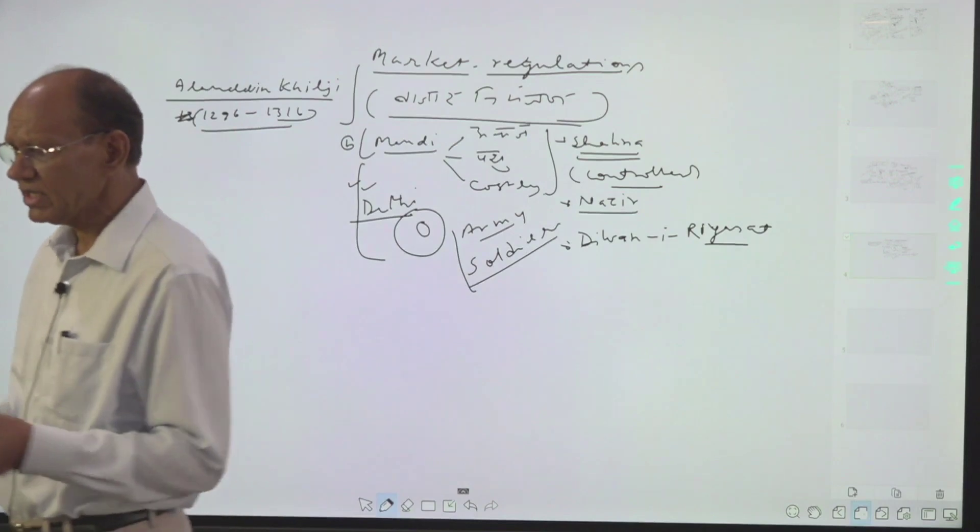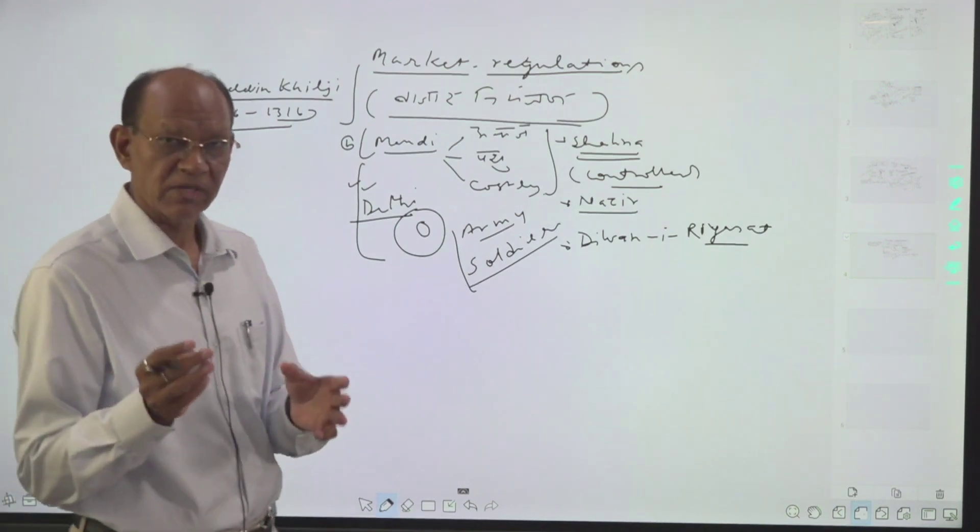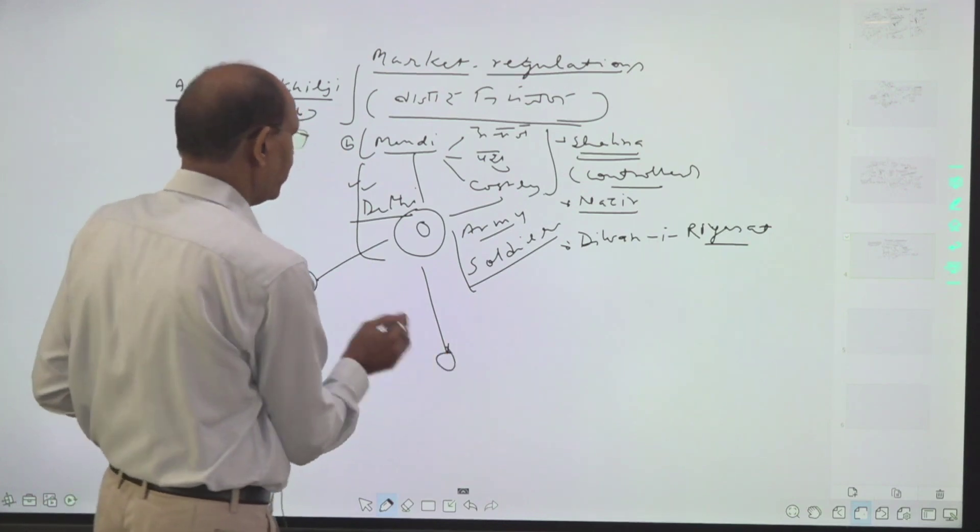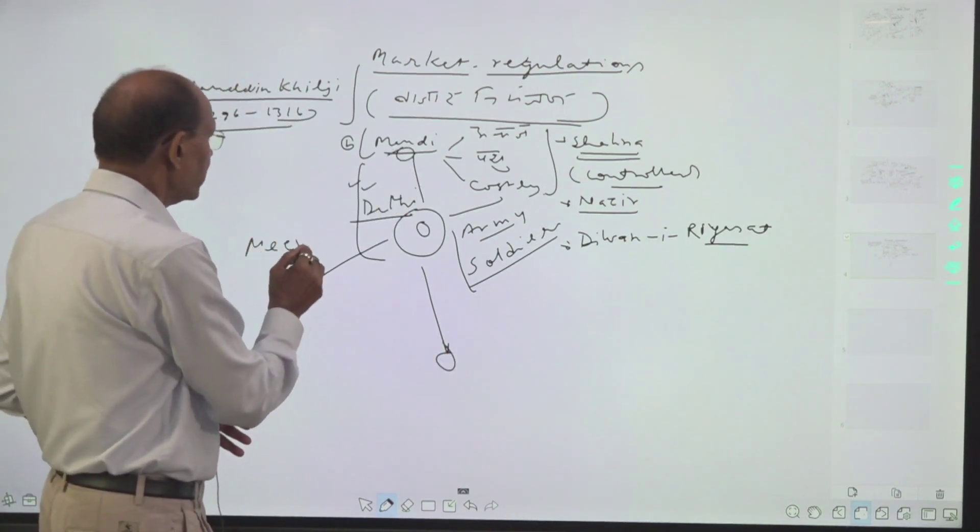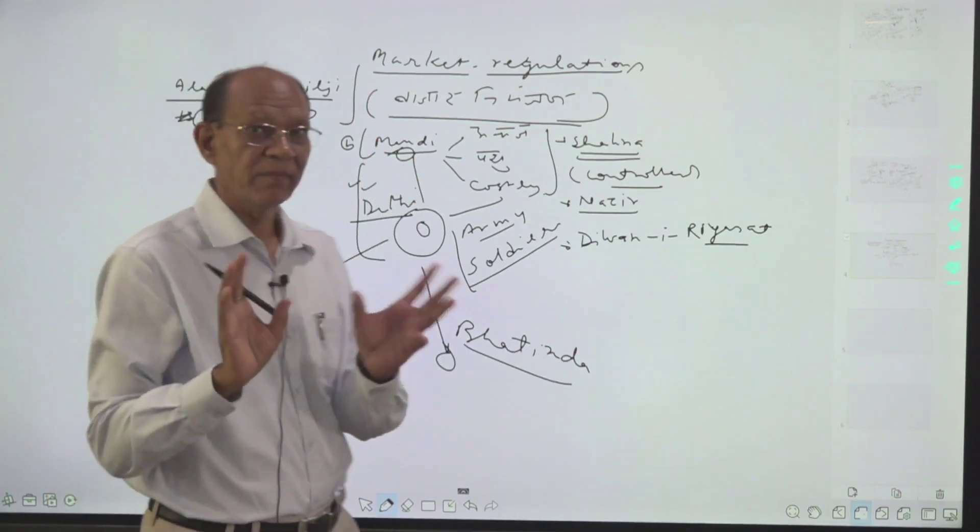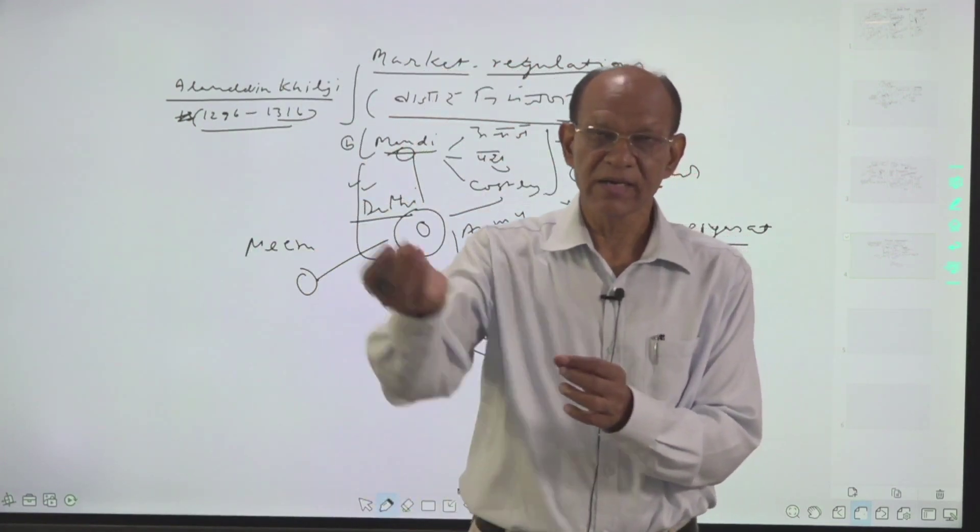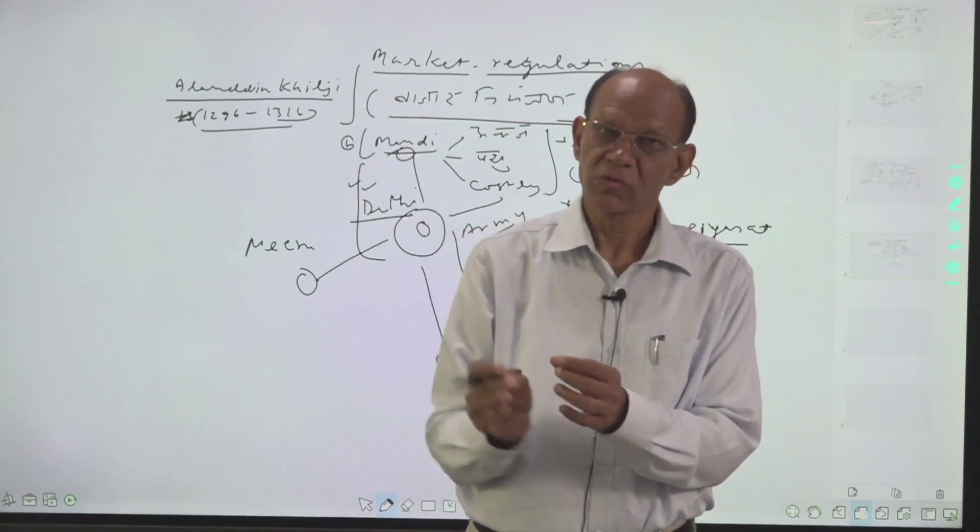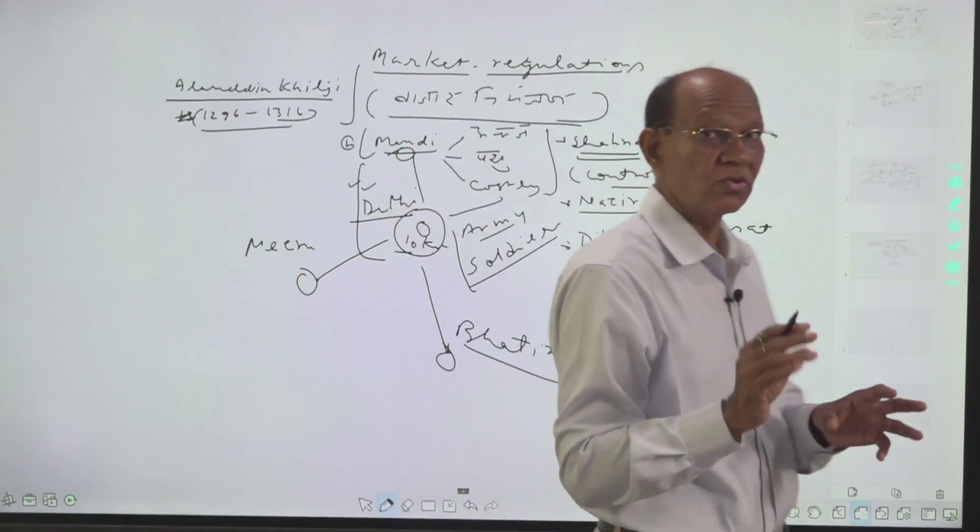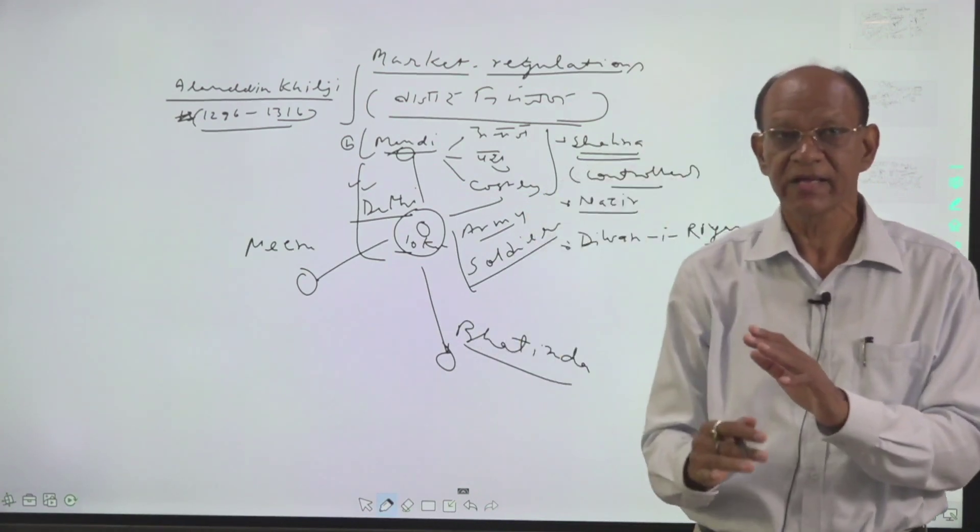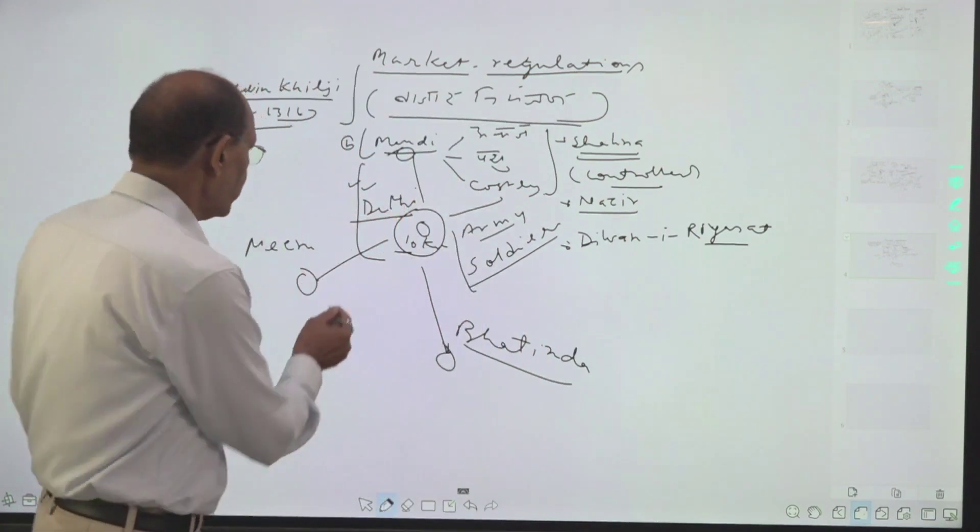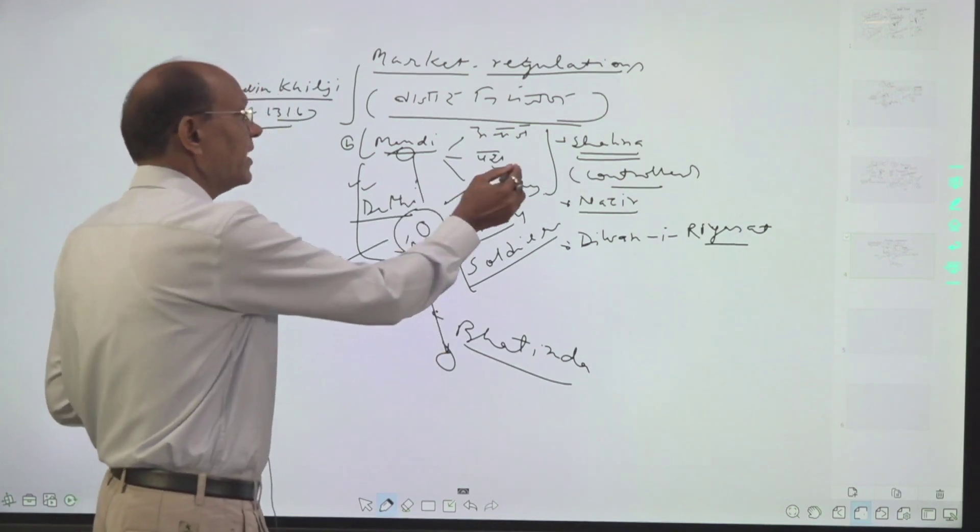Price control is not meant to be low. Price control is meant to be at the optimum level. The idea behind this was to keep the control over prices. Control means that it should be kept at the optimum level within reasonable limits, and it should be balanced and harmonious.